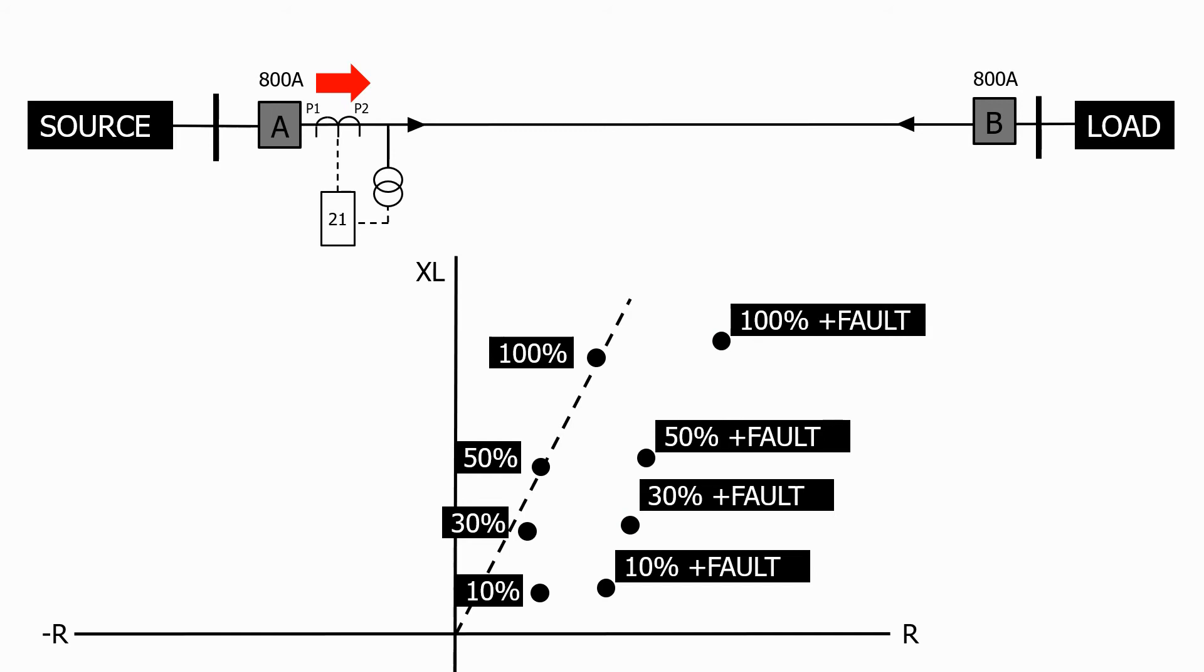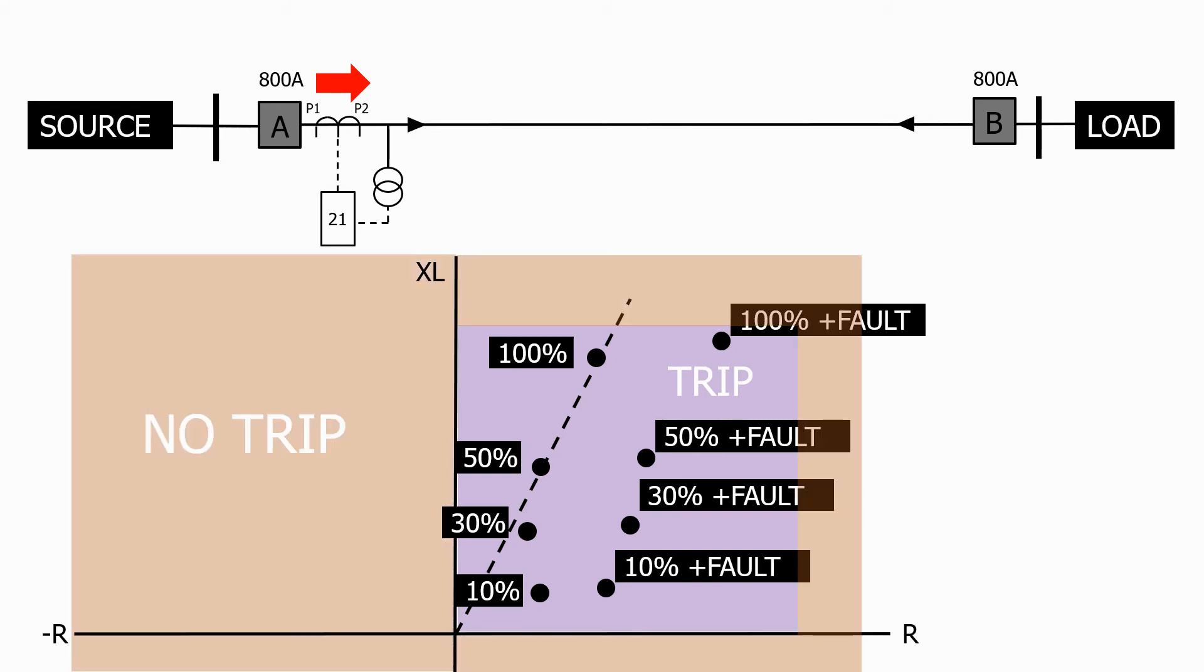We now have multiple possible impedance values for a fault on the line. So how do we set up our impedance relay to operate for all of these different values? Well, the normal way is to set up an impedance operating zone. Inside the zone, we know that the fault is on the line that the impedance relay is protecting. And for any impedance value inside this zone, the relay will trip the circuit breaker, removing the fault from the system. Outside the protective zone, the relay will not operate.